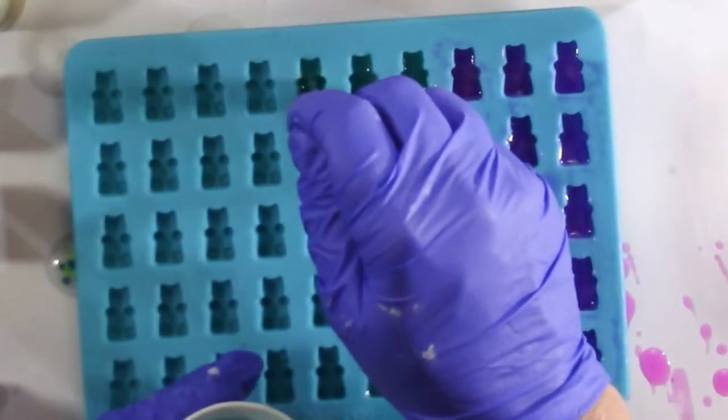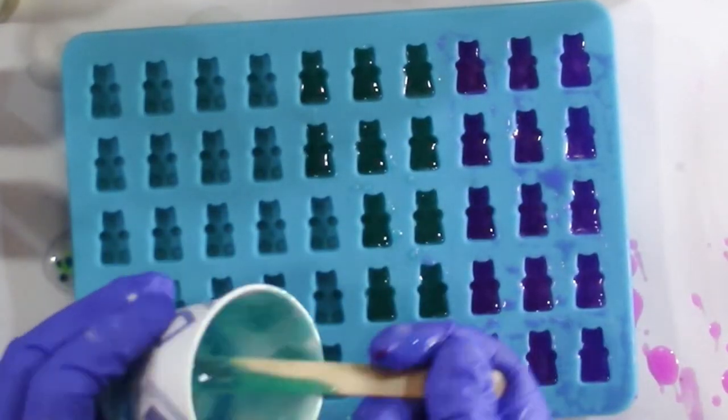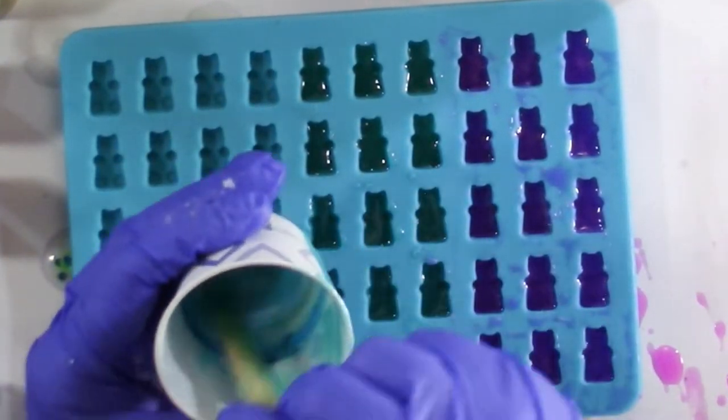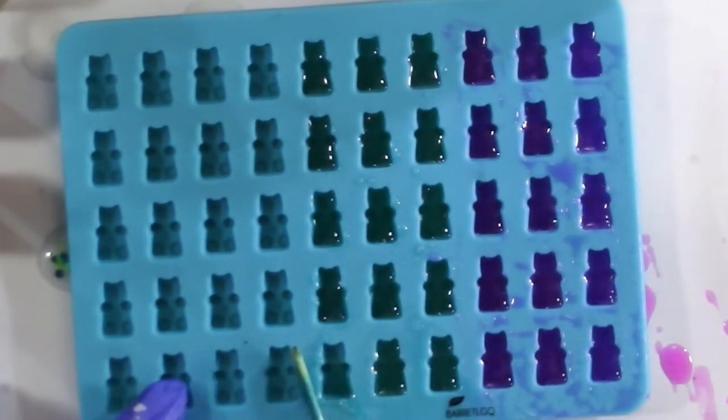Every couple of rows, I am using a different color of tinted resin. With the excess resin, I am going to fill up some small geode molds that I have sitting around to use in future projects.